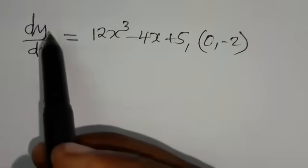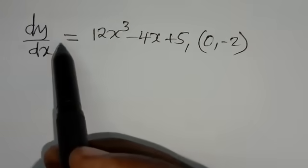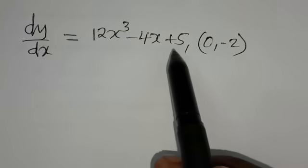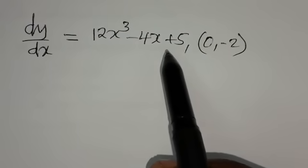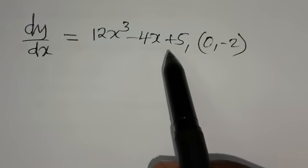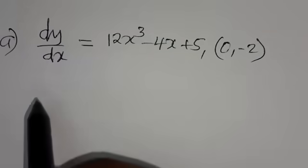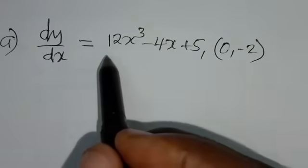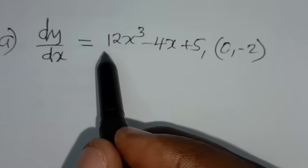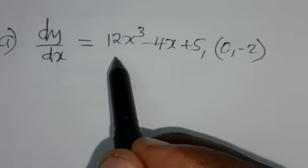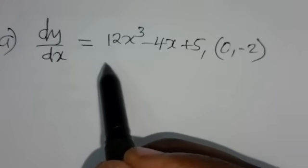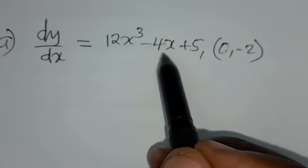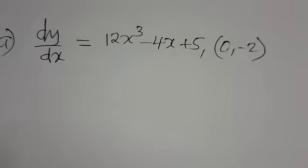Since we have been given dy/dx, it means that what we have been given is the derivative of the original equation that we are told to find. Since we have been given the derivative, for us to find the original equation — which is the equation of the curve — we are supposed to integrate this so that we find what y is.